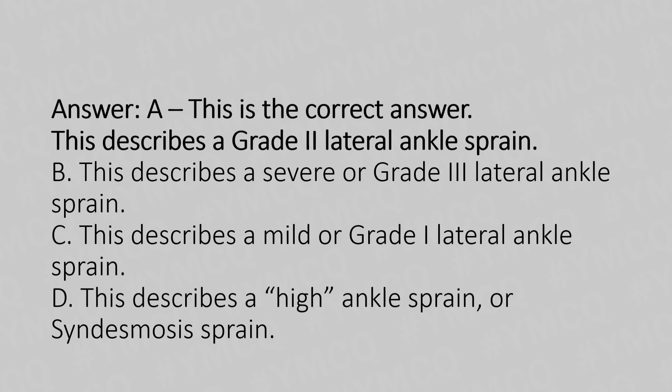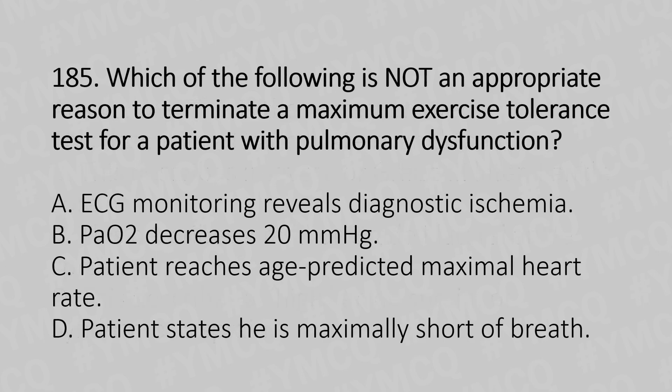Now let's move to question number 185. Which of the following is not an appropriate reason to terminate a maximum exercise tolerance stress test for a patient with pulmonary dysfunction? Option A: ECG monitoring reveals diagnostic ischemia. Option B: PO2 decreases 20 mmHg. Option C: patient reaches age-predicted maximal heart rate. Option D: patient states he is maximally short of breath.